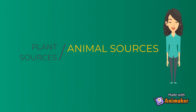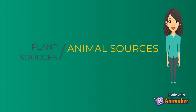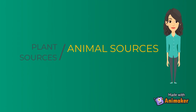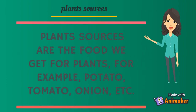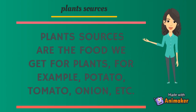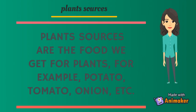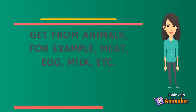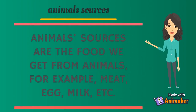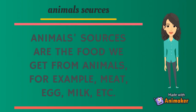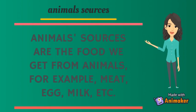There are two types of food sources: plant sources and animal sources. Plant sources are the food we get from plants, for example, potato, tomato, onion, etc. Animal sources are the food we get from animals, for example, meat, egg, milk, etc.